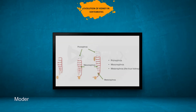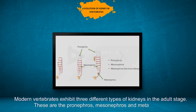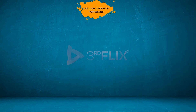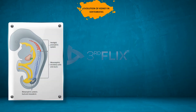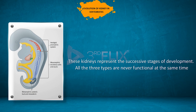Modern vertebrates exhibit three different types of kidneys in the adult stage: the pronephros, mesonephros, and metanephros. These kidneys represent the successive stages of development. All three types are never functional at the same time.